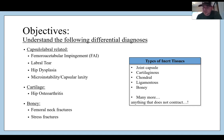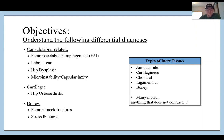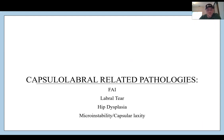As a recap on some of the types of inert tissues, we do have joint capsule, cartilaginous tissues, chondral tissues, ligamentous, and bony — these are the main ones we're going to see in the hip that have pathology associated with them.